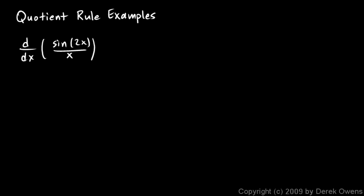Now we will work through some quotient rule examples, and the first one is to find the derivative of sine 2x over x. So we'll just apply the quotient rule directly.